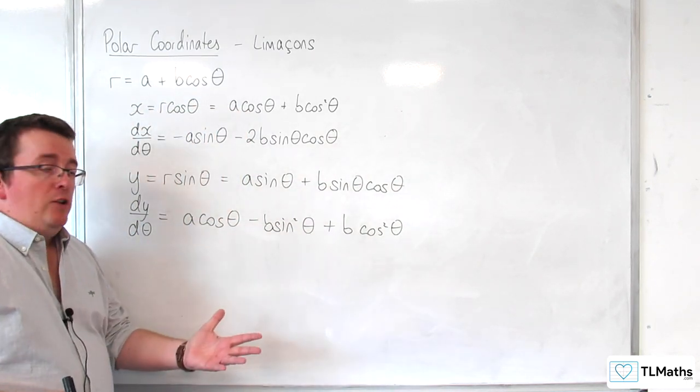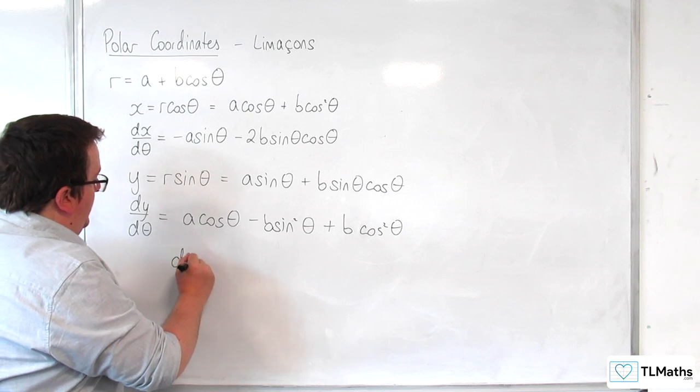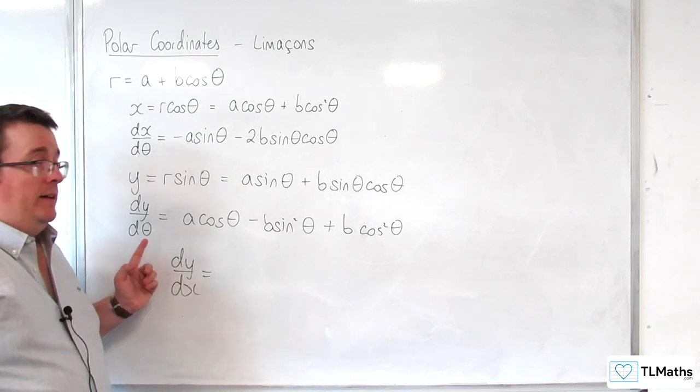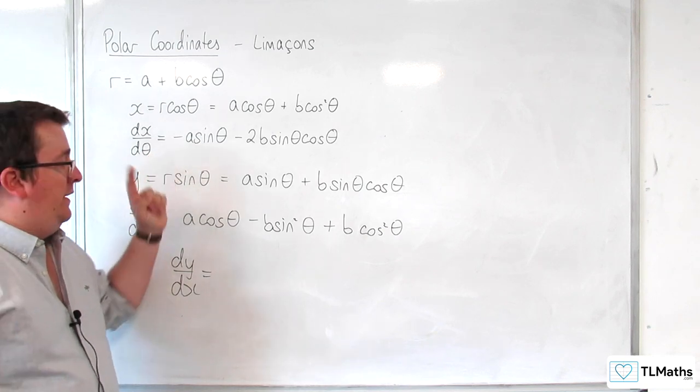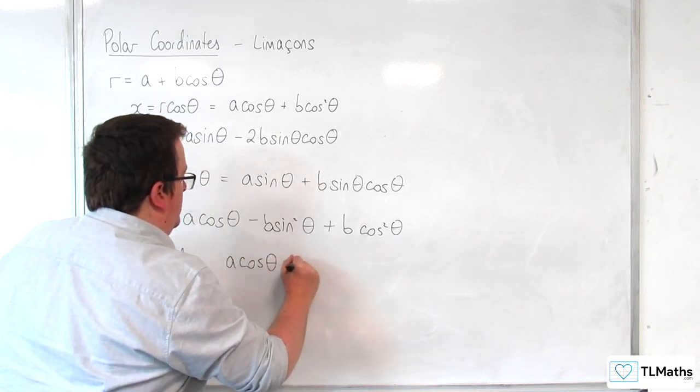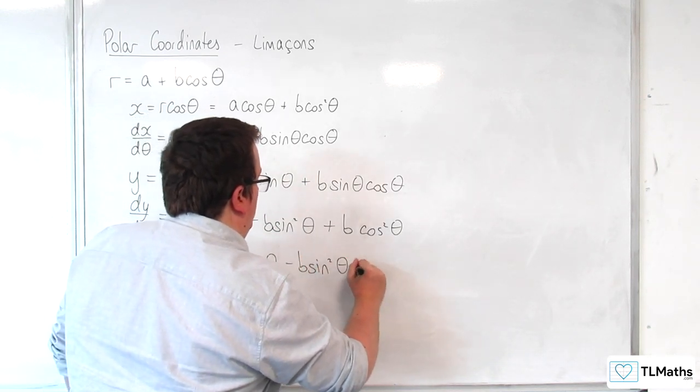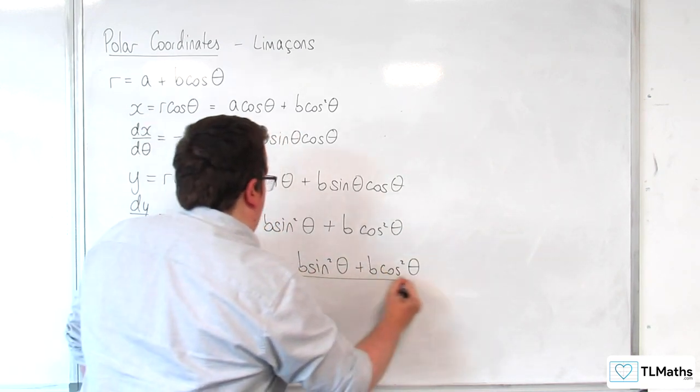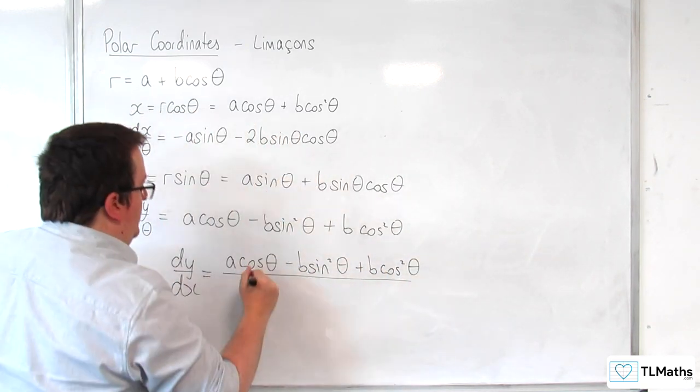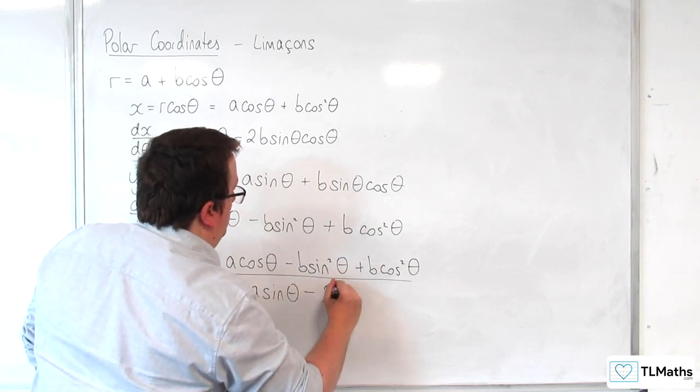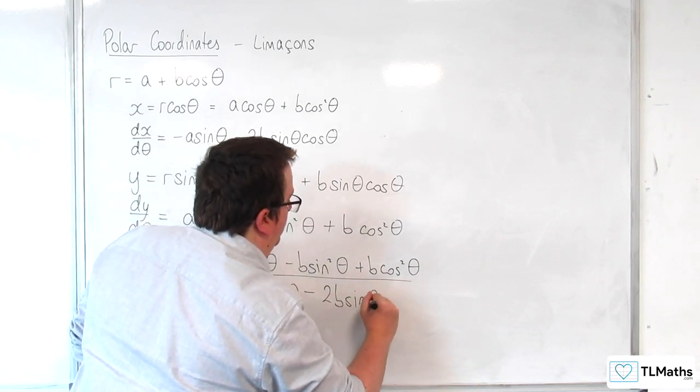Now, using parametric differentiation, dy by dx will be equal to dy by d theta divided by dx by d theta. So, we have a cosine theta minus b sine squared theta plus b cosine squared theta, over minus a sine theta take away 2b sine theta cosine theta.